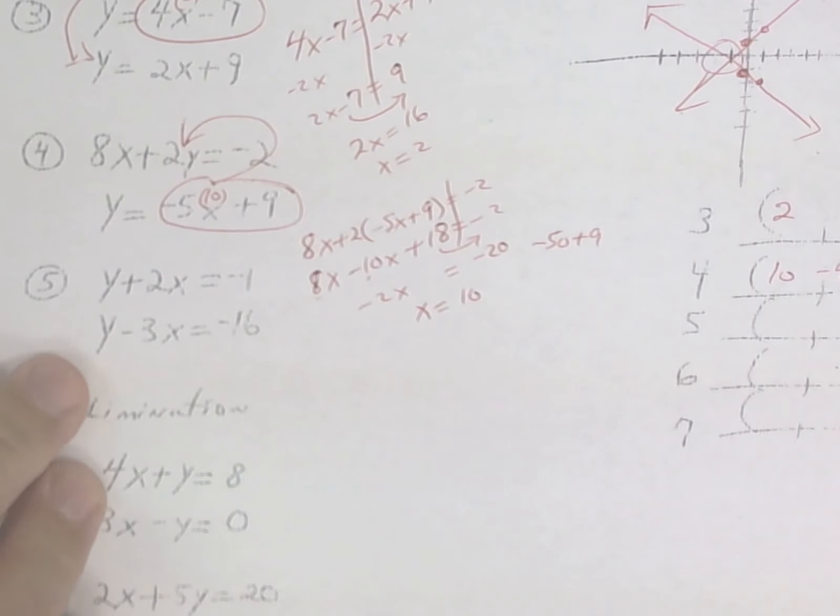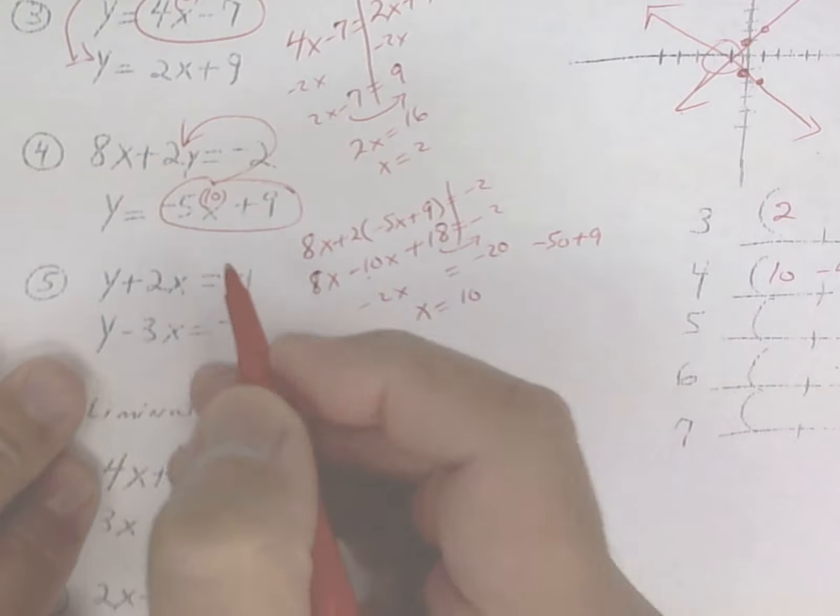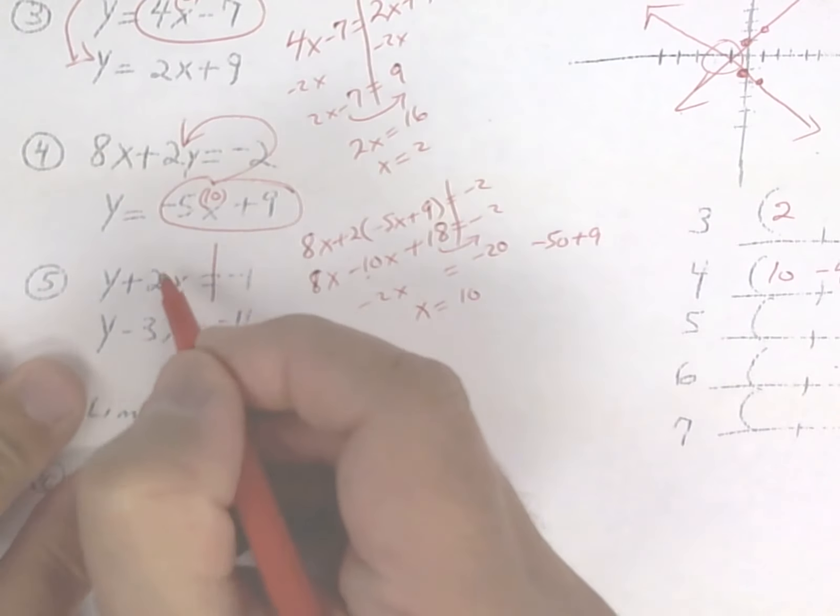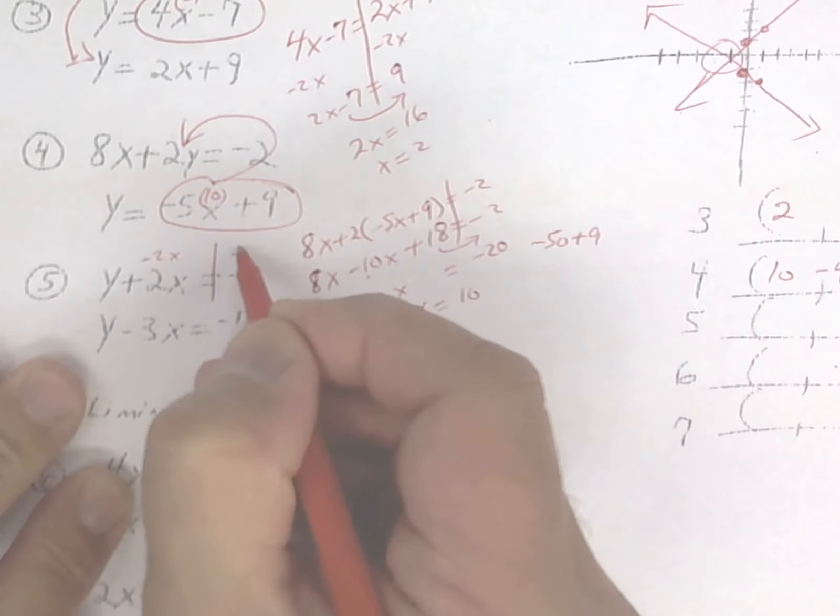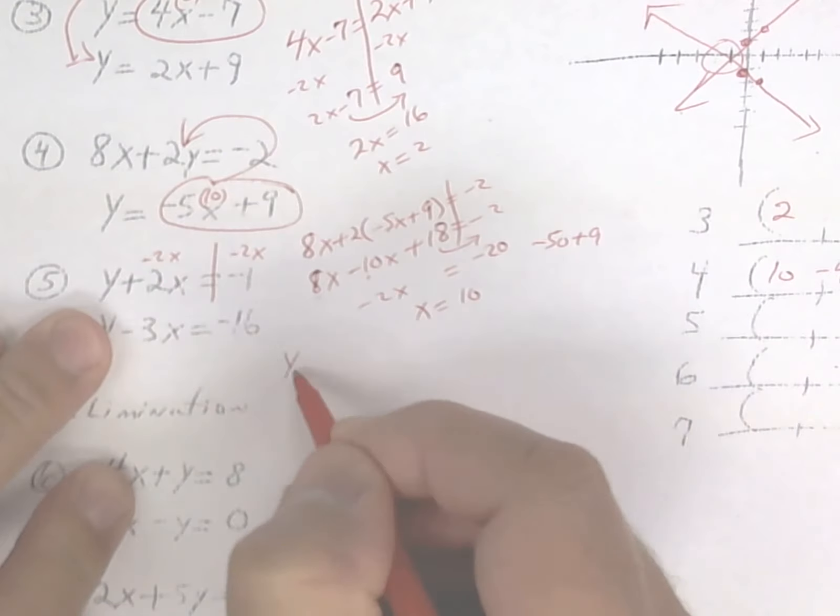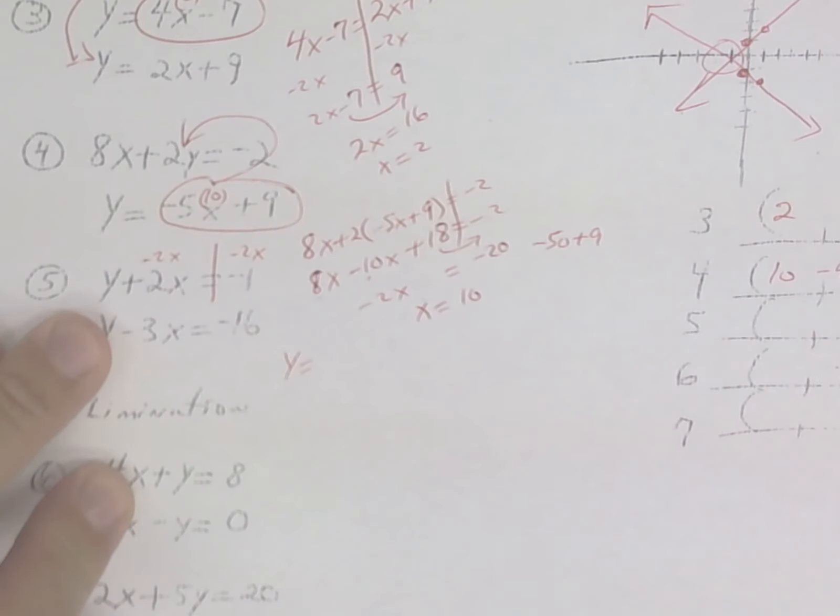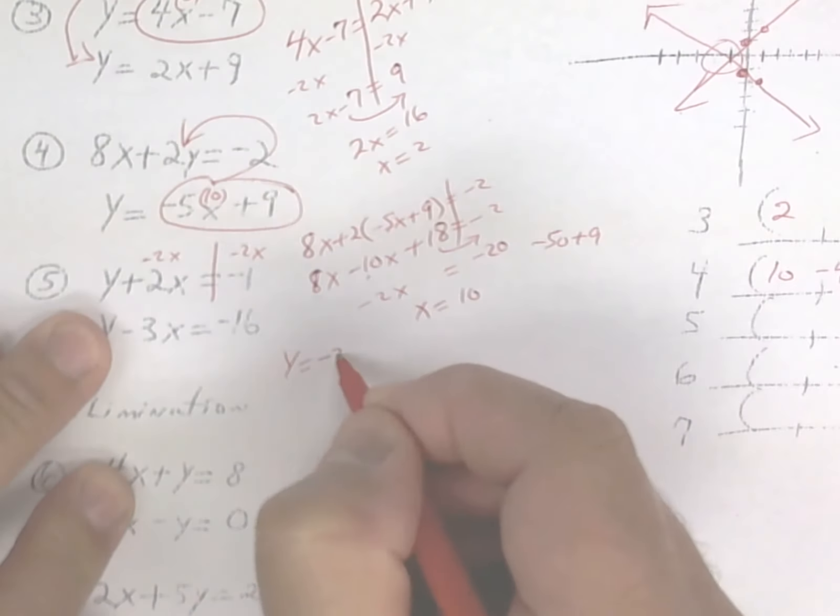The next one, to do substitution, you've got to get one of these by itself. So I'm going to subtract 2x and I'm going to get y equals negative 2x minus 1.